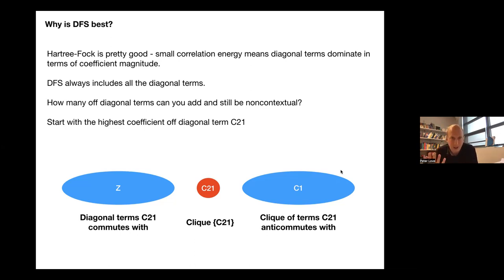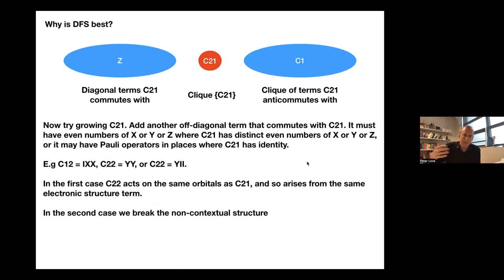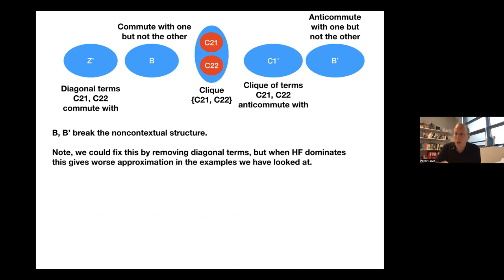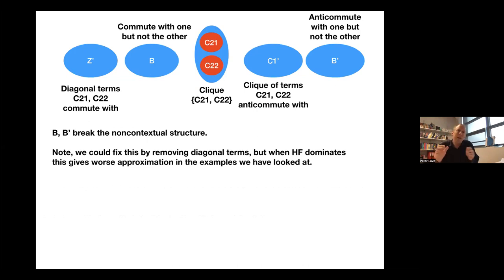There's also an obstacle to adding too many off-diagonal terms — you can just add one. That means you have one clique with one off-diagonal term in it. But if you add another one, it will tend to break the non-contextual structure. You can add exactly one off-diagonal term to your diagonally dominated thing before you start breaking up the non-contextual structure. You might worry why this doesn't apply generally — well, you could remove diagonal terms and then add off-diagonal terms, but when the diagonal terms are very dominant, your depth-first search will never do that because it will always want to keep those big diagonal terms.